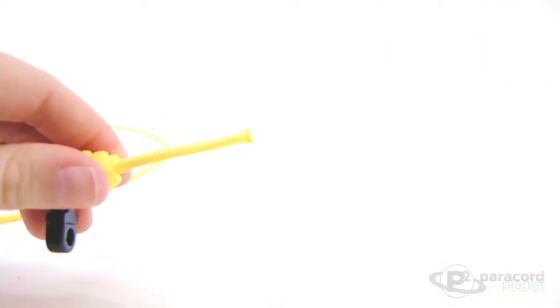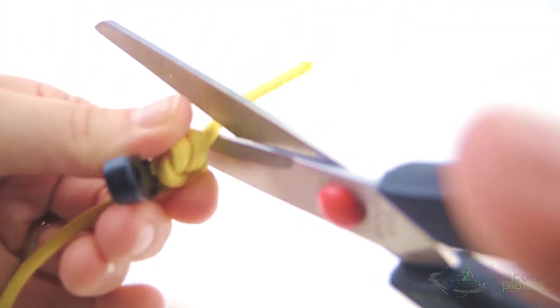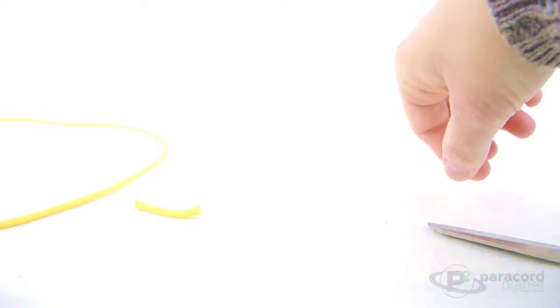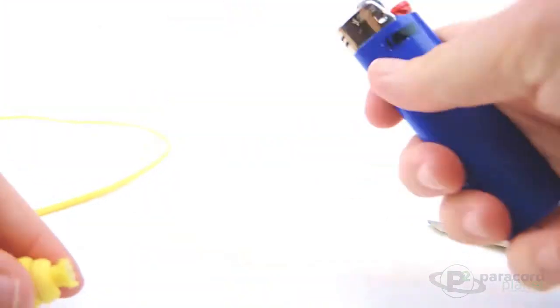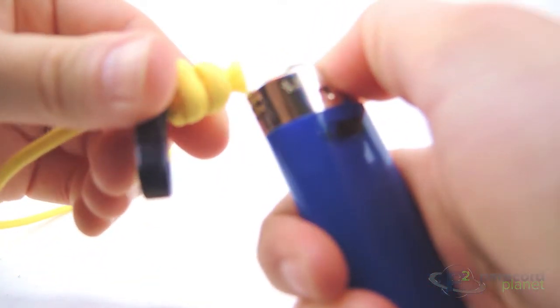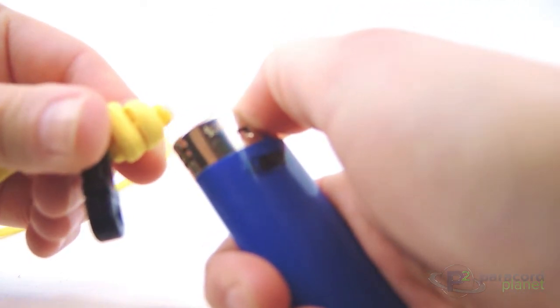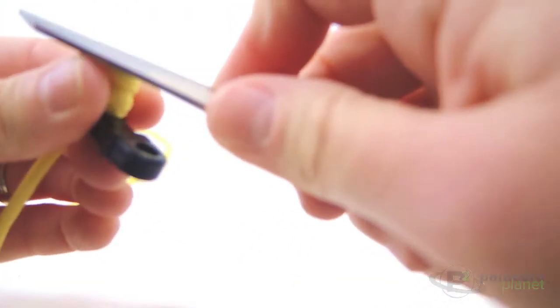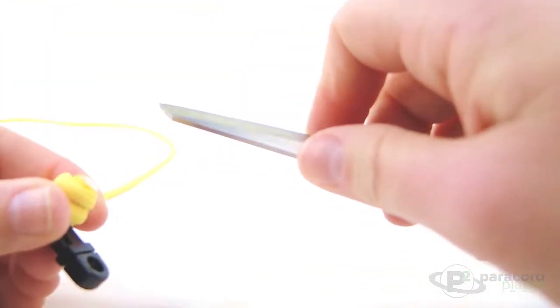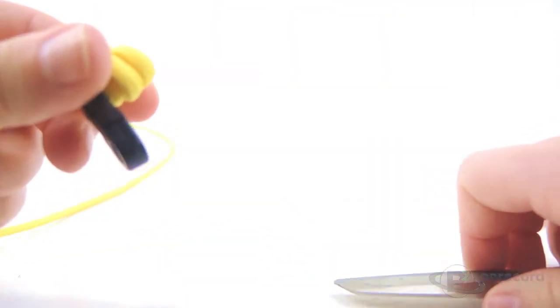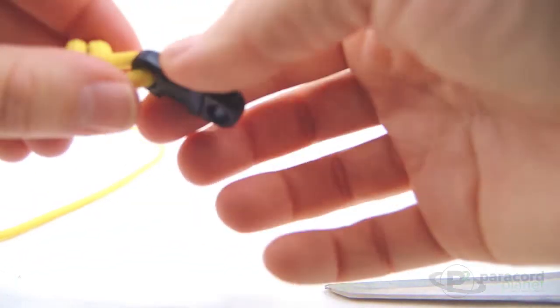And then you'll take this end, snip it, and singe it off, and flatten it with your knife or scissors, whatever you have. And it is still adjustable.